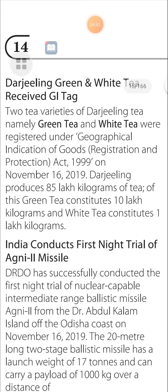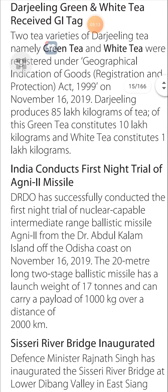On November 16, 2019, Darjeeling produced 85 lakh kilograms of tea, of which green tea constituted 10 lakh kilograms and white tea constituted 1 lakh kilogram.